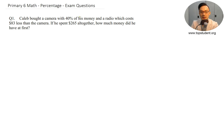Caleb bought a camera with 40% of his money and a radio which cost $83 less than the camera. If he spent $265 altogether, how much money did he have at first?